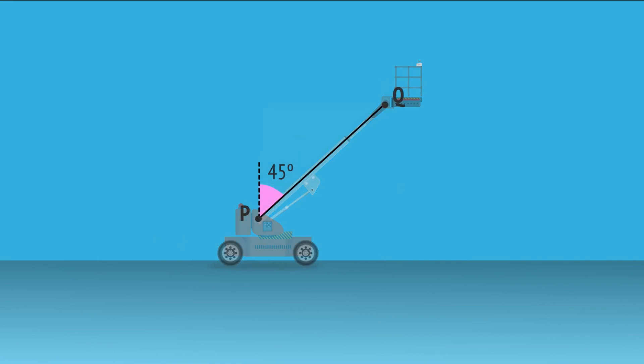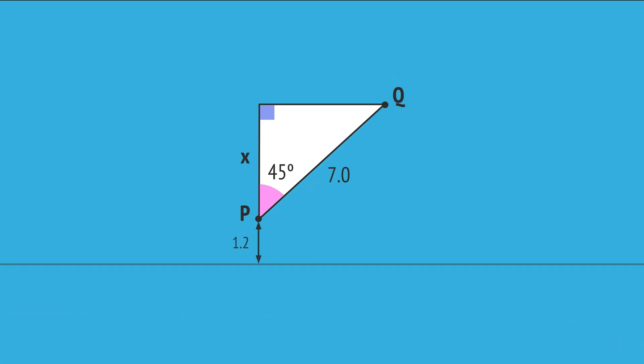If we draw a line to represent the arm from P to Q and use the 45 degree angle, we can form this right-angled triangle. Since we know point P is 1.2 meters above the ground, the height H is equal to this side X plus 1.2. We know an angle and one side, so we can use a trig ratio to work out side X. We label the hypotenuse, the opposite and the adjacent.